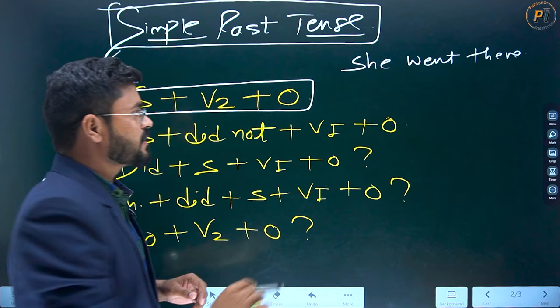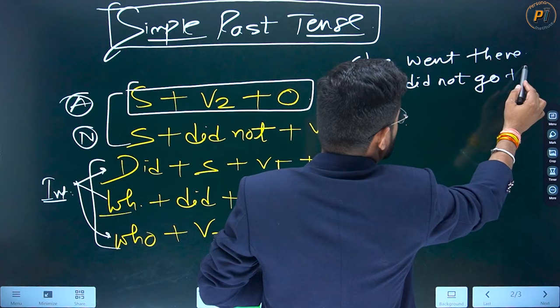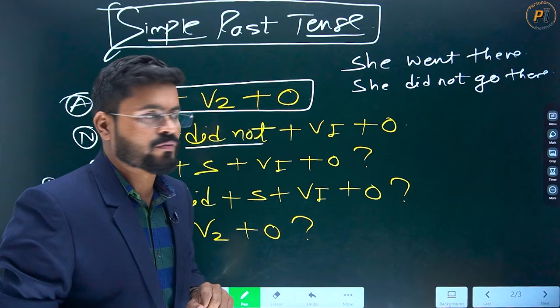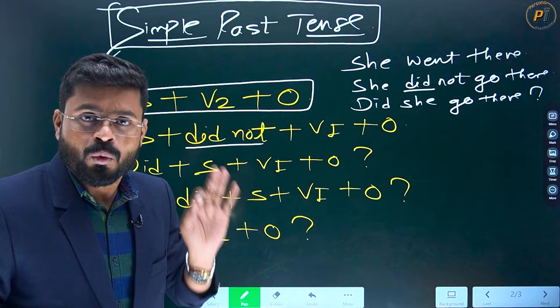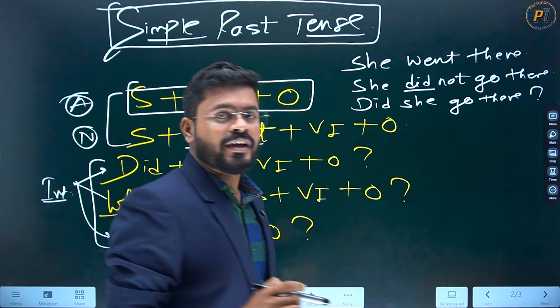She did not go there — that would be the negative. Aap dekh sakte hain, negative mein 'did not' lagane ke baad mein yeh V2 kaise V1 mein badal gaya. Agar aap iska interrogative bana rahe hain toh 'did' uthkar aage aayega: Did she go there? And at the end of the sentence we must use the question mark. Without a question mark, if you are writing, that is going to be wrong. Did she go there? — Kya woh wahaan gayi?